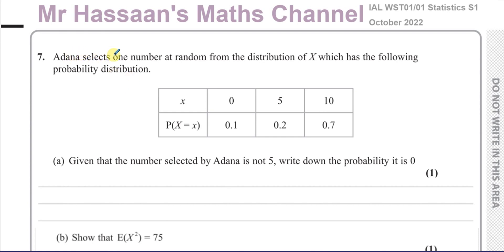It says Adana selects one number at random from the distribution of X, which has the following probability distribution. There are three possible outcomes when she selects a number. Those outcomes are 0, 5, and 10 — those are the discrete random variables in this case. The probability of picking a 0 is 0.1, a 5 is 0.2, and a 10 is 0.7. That's called the probability distribution.